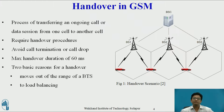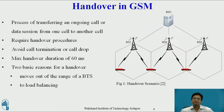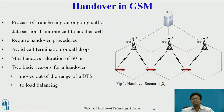In a cellular system, we require a handover procedure because a single cell does not cover the whole service area. The smaller the cell size, the faster a mobile session moves through the cell. For GSM, this can be up to 250 km per hour, which is why we require more and more handovers. Handover should not cause a cutoff or call drop, and GSM aims at a maximum handover duration of 60 milliseconds.